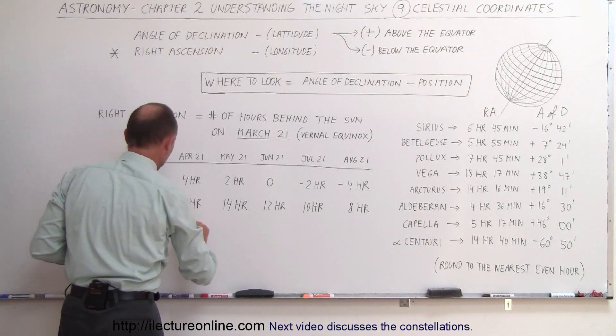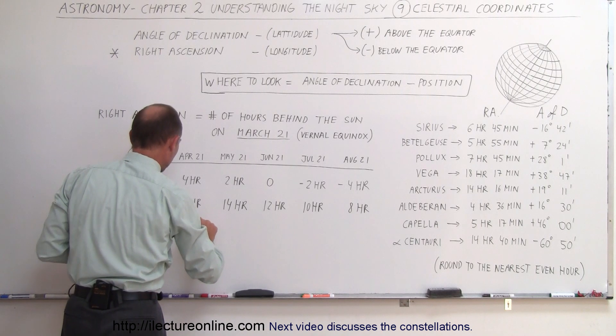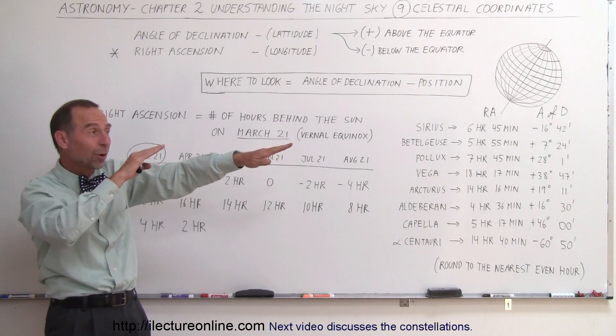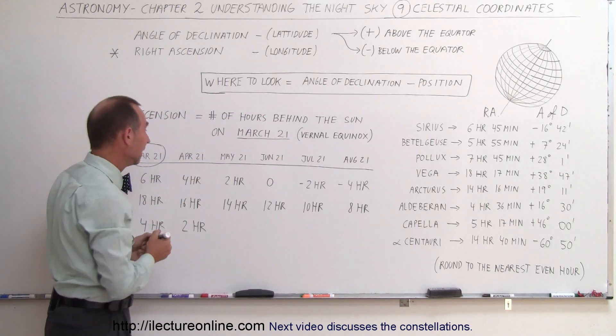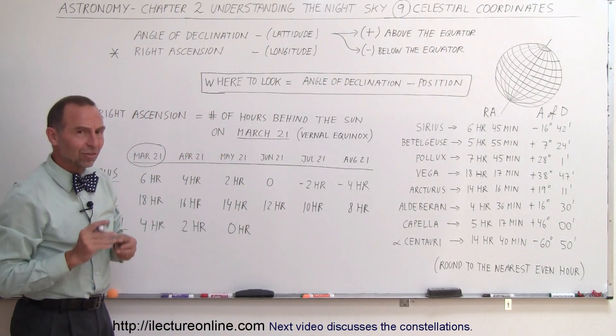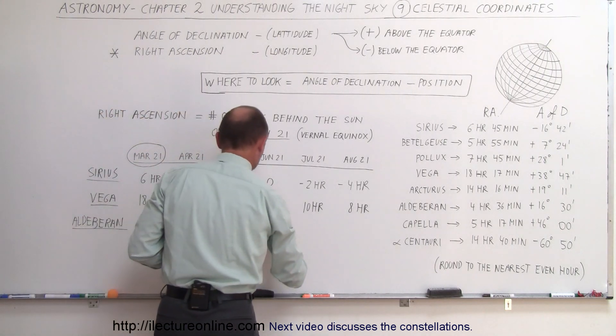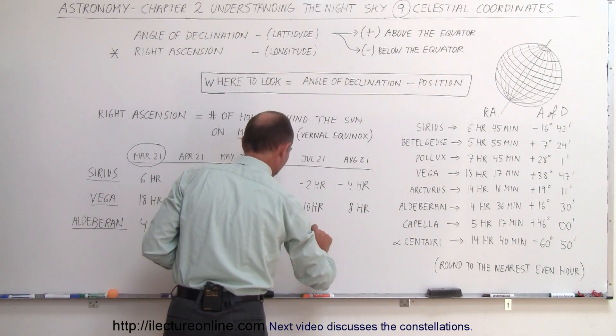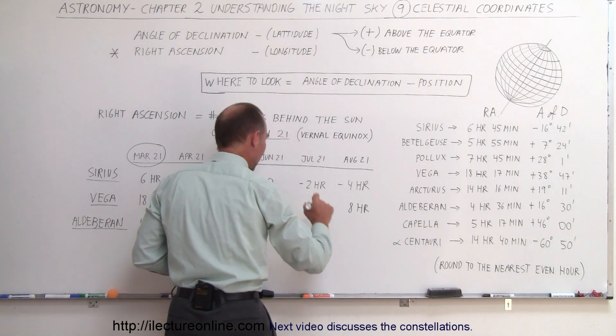But in April, 2 hours later, I mean, 1 month later, it's now only 2 hours behind the Sun, so when the Sun sets, Aldebaran will be fairly close to the horizon. In May, you will not be able to see it, because it's even with the Sun. In June, it is 2 hours ahead of the Sun. In July, it's 4 hours ahead of the Sun, and in August, it is 6 hours ahead of the Sun.